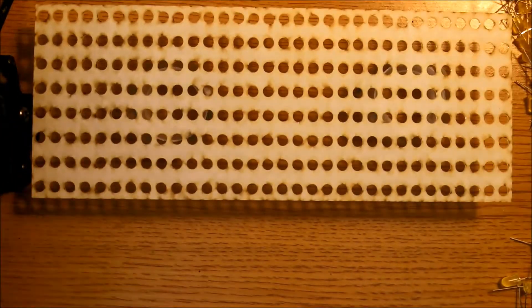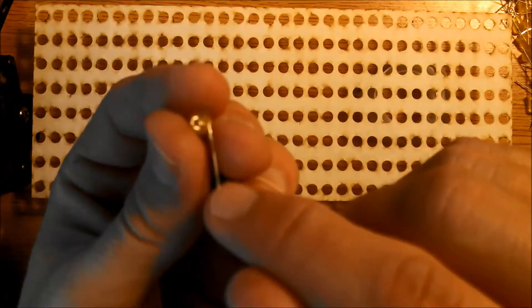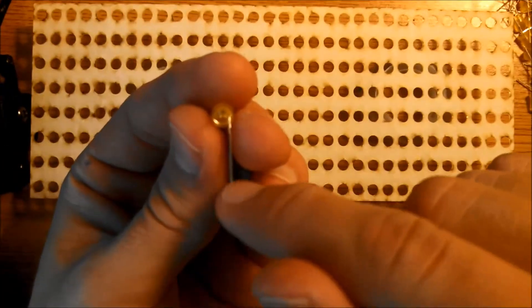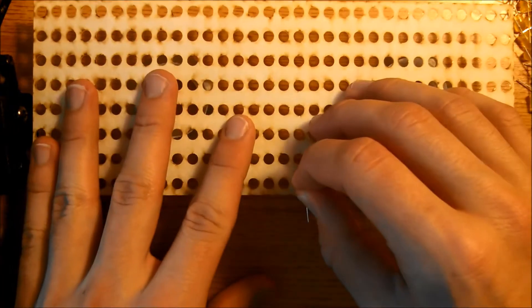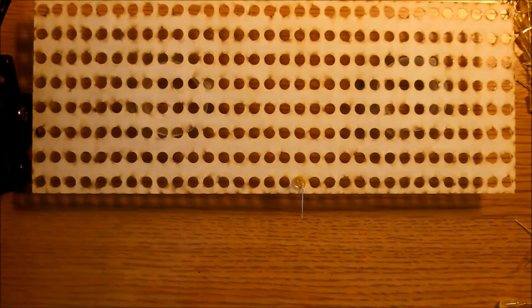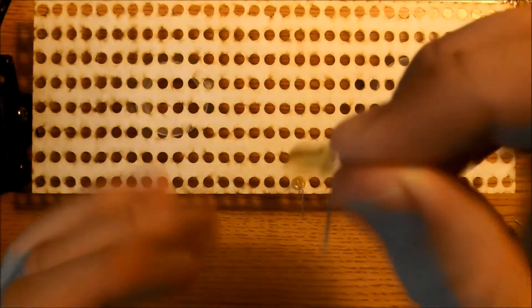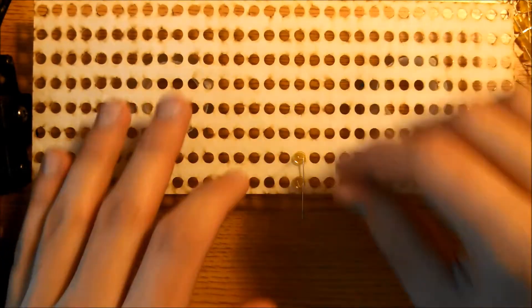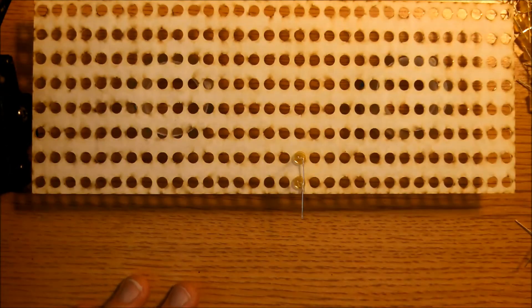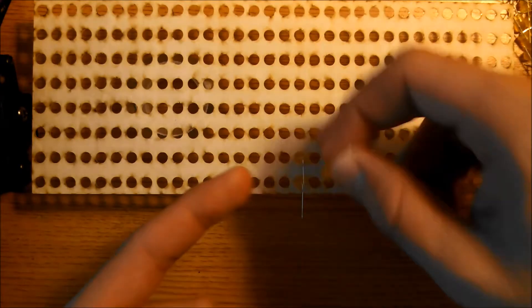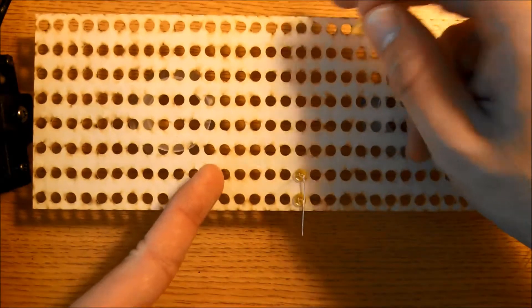Place it like so and then grab an LED. With the short lead pointing down, place it at the bottom of one of these columns. Then take another LED and place it above the one you just placed. Go ahead and fill up this whole column.